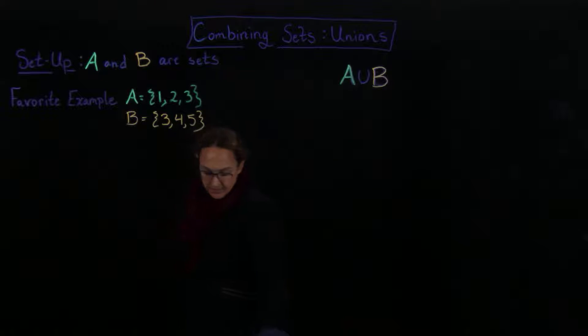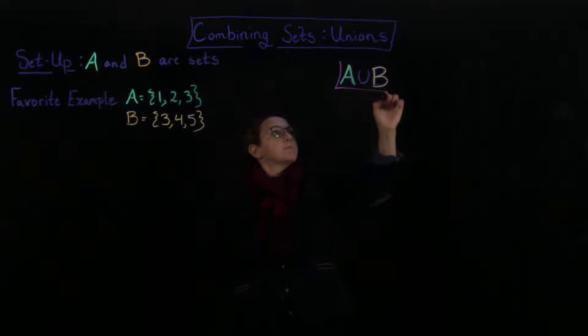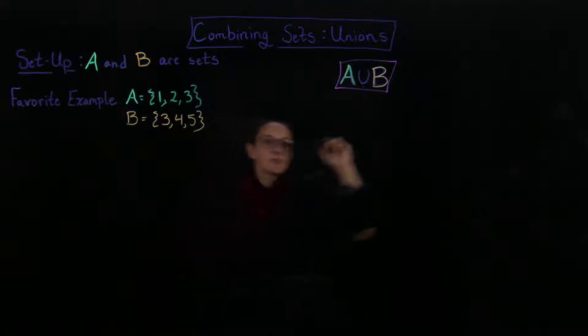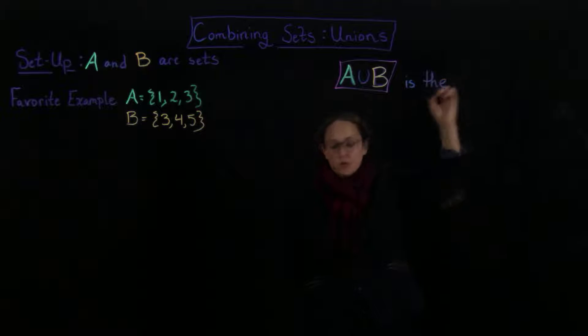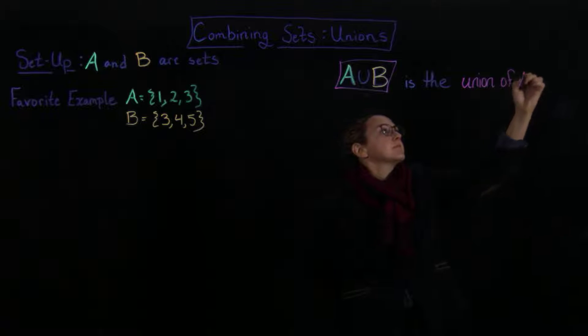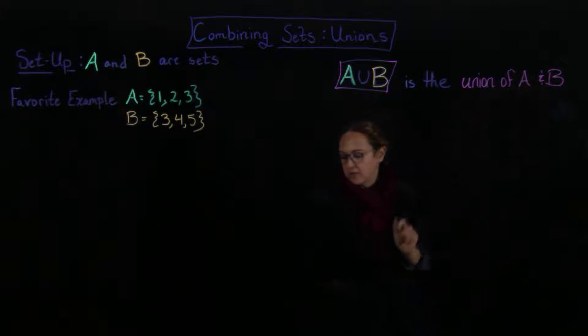Okay, so this is our notation, I'm going to box it in red. So this, what does this mean? This is notation, and what this means, so this is the union is the word, so this is the union of A and B.